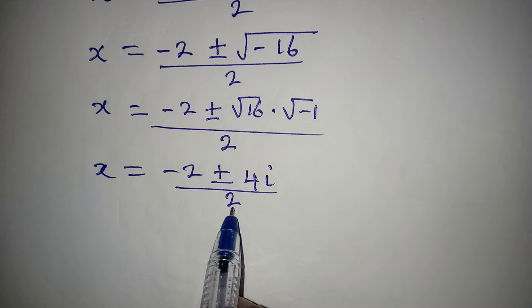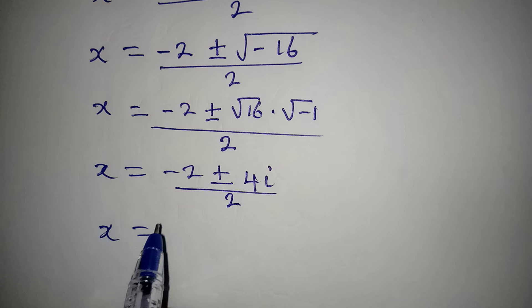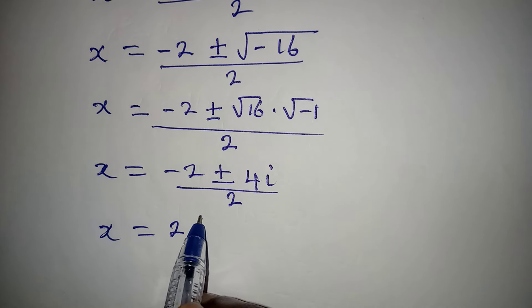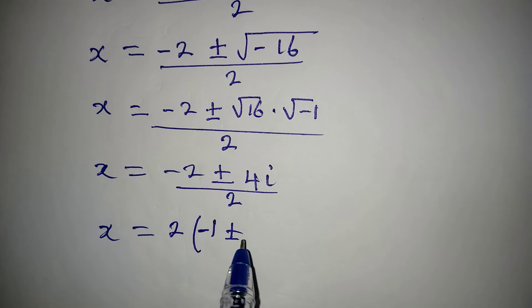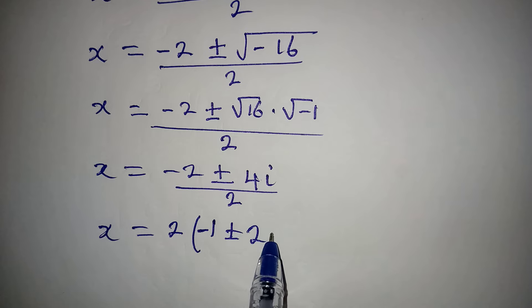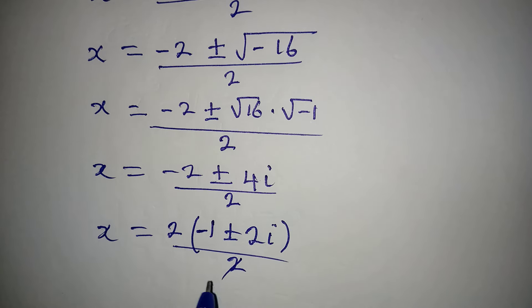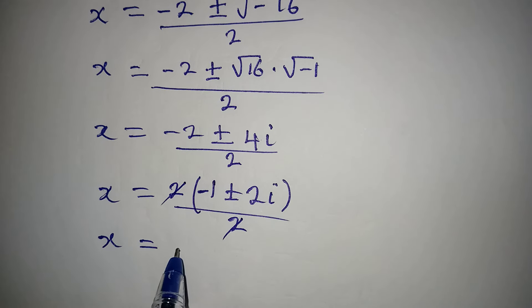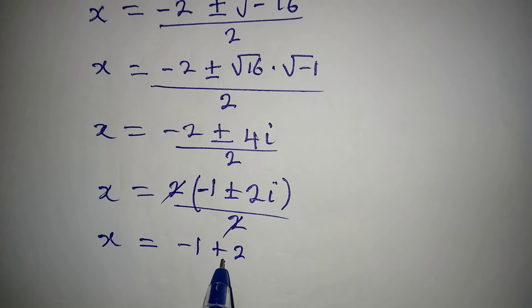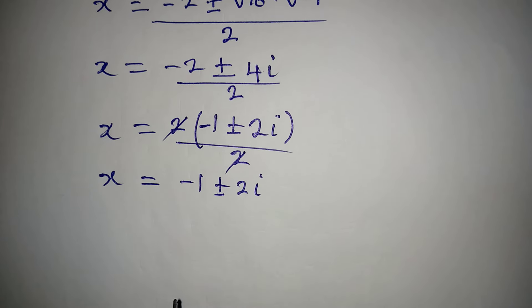The square root of 16 is 4, and the square root of negative 1 is i. So x equals minus 2 plus or minus 4i, over 2. Factoring out 2 as the common factor gives x equals minus 1 plus or minus 2i. This is a two-in-one solution.